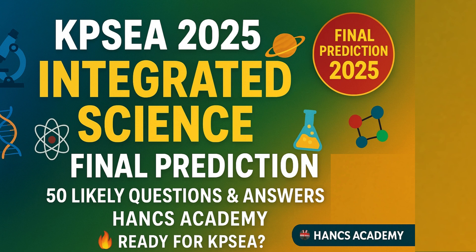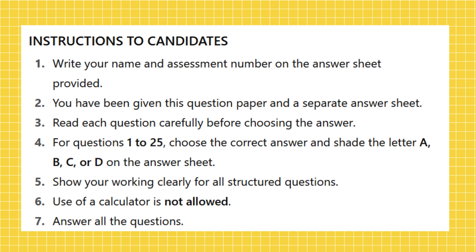Kenya Primary School Education Assessment C 2025, Integrated Science A, Final Prediction Paper, Grade 6. Time: one hour. Instructions to candidates: Write your name and assessment number on the answer sheet provided. You have been given this question paper and a separate answer sheet. Read each question carefully before choosing the answer. For questions 1 to 25, choose the correct answer and shade the letter A, B, C, or D on the answer sheet. Show your working clearly for all structured questions. Use of a calculator is not allowed. Answer all the questions.